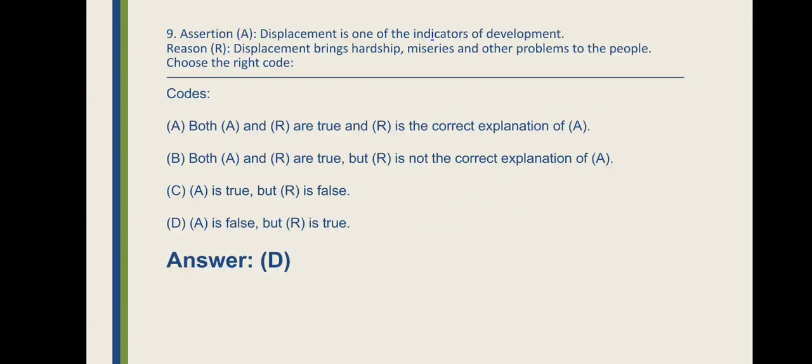Option A: Both A and R are true and R is the correct explanation of A. Option B: Both A and R are true but R is not the correct explanation of A. Option C: A is true but R is false. Option D: A is false but R is true. Here the correct answer is Option D, i.e., A is false but R is true.